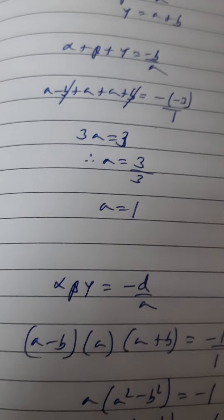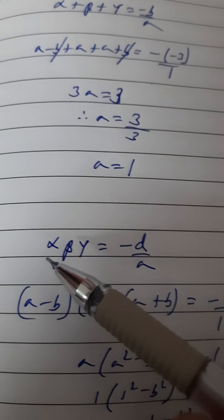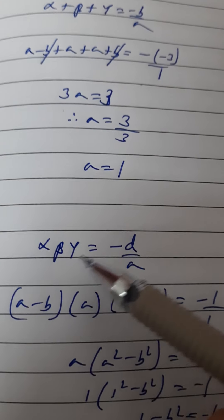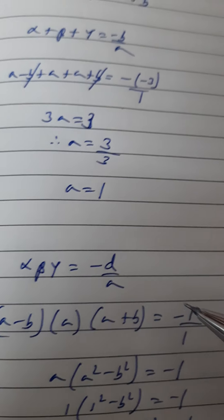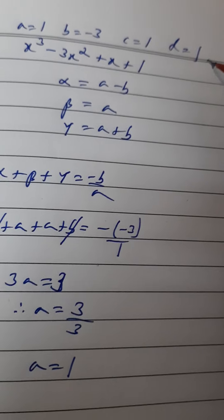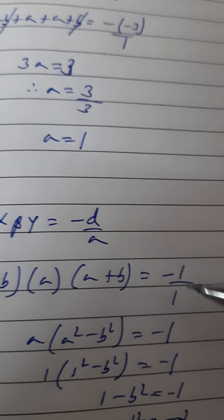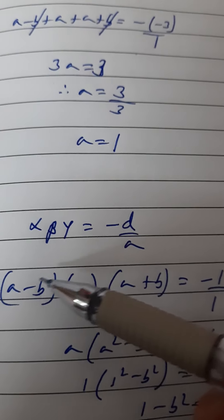Now that is αβγ. So αβγ = -d/a. The value of αβγ we know, and -d/a, the value of d here is 1, so here we get -1 upon 1.